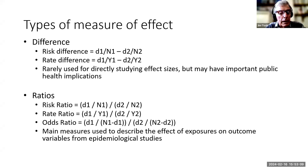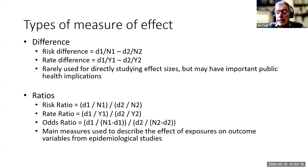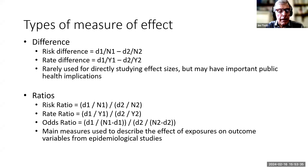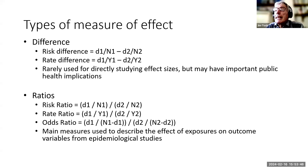A rate ratio, again, is going to be the rate in one group — the number positive divided by the total time at risk — divided by the number positive in the second group divided by the total time at risk in the second group. The odds ratio is the odds in one group divided by the odds in the second group. So often when we come to doing the analysis, we're going to use risk ratios, rate ratios, and odds ratios far more often than risk differences and rate differences, simply because the statistical methods for using ratios are more advanced and more comprehensive.